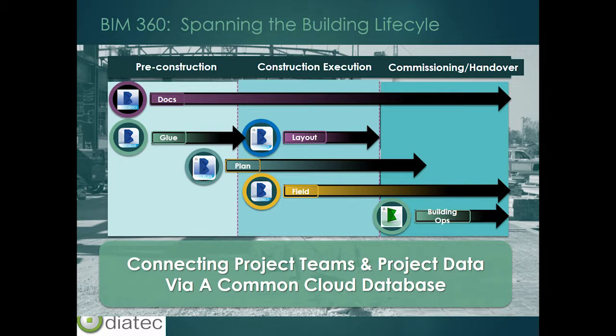Once we move to construction, Layout handles validation and verification to ensure as-built conditions in the model match what was pre-constructed, and identifies deviations on plan. Field starts to facilitate the rich data required for commissioning and handover — bringing information online for HVAC and MEP — that facility managers specifically will require to maintain and operate the building. And Building Ops takes all information generated up to this point and puts it in a format that operators, owners, facilitators, and occupants can use to manage and maintain the asset.